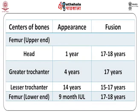For the femur, at the upper end, the head center appears at one year and fuses at 17 to 18 years. The greater trochanter center appears at four years and fuses at 17 years. The lower end of the femur has a center appearing at nine months of intrauterine life and fusing at 17 to 18 years.